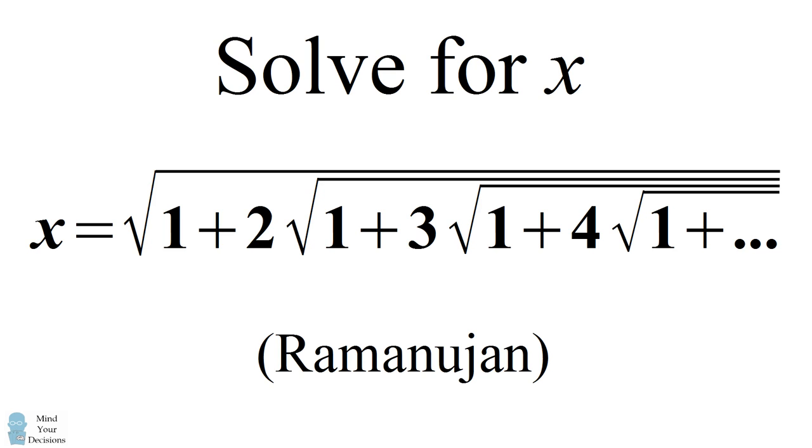You might try to find an approximation in a calculator, a spreadsheet, or computer program. You'll get that x is equal to about 3. In fact, x is equal to exactly 3. Let's see why.